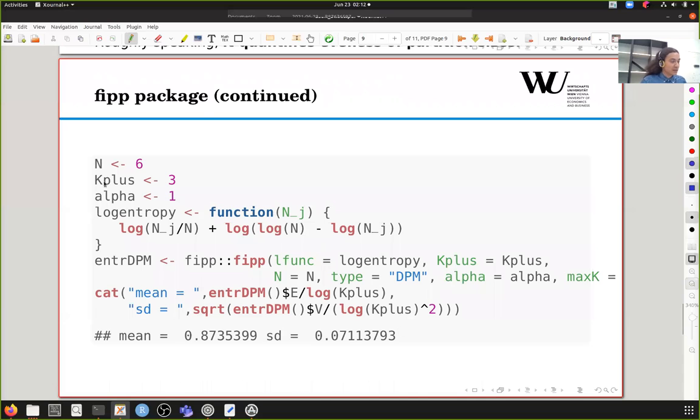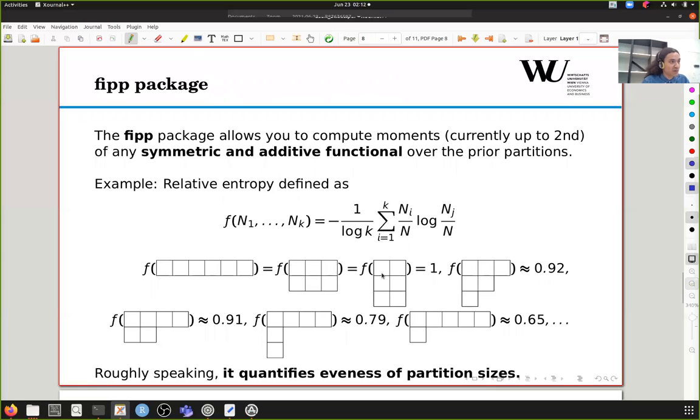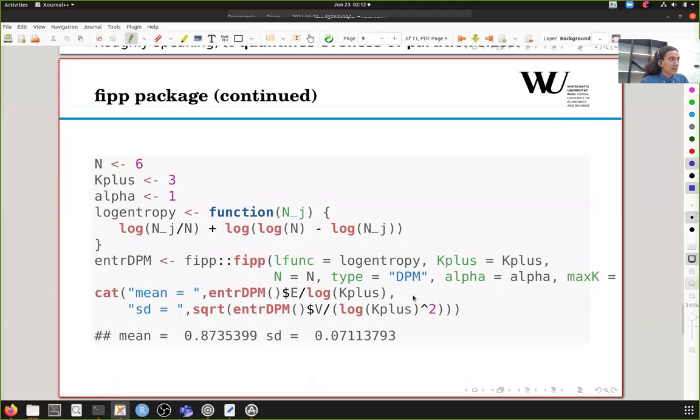This is how the FIP package can be used. N is the sample size. Here we plug in six, so we don't really need the FIP package. K plus is the constraint that we unfortunately have to put on. This is the length of the partition, which corresponds to the row of the Young diagram. Here we are fixing that to three, which means that we are only constructing these three partitions.